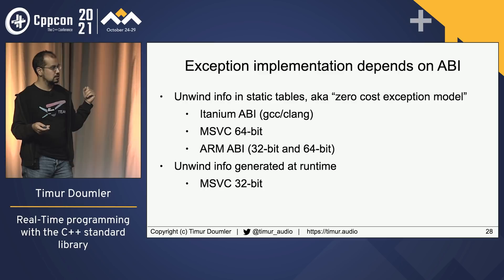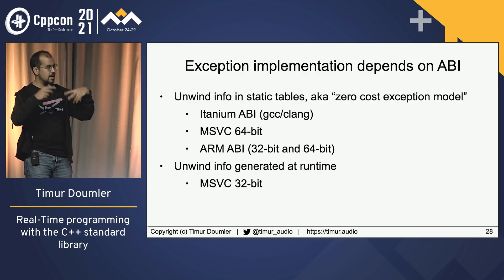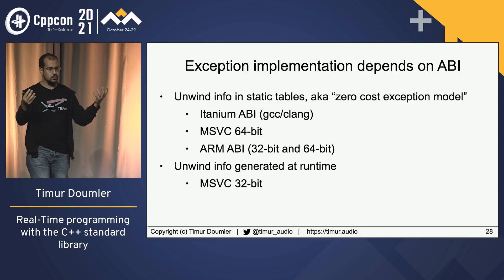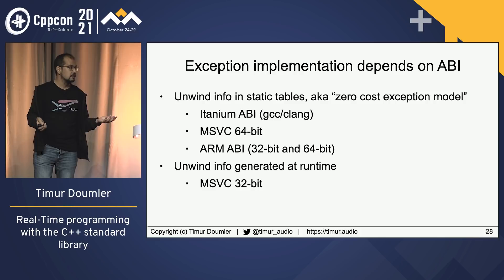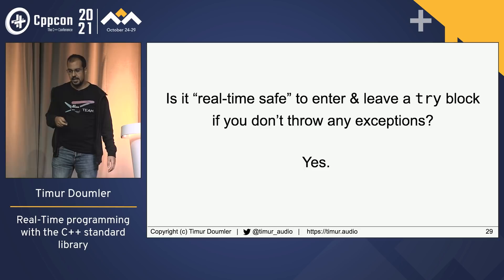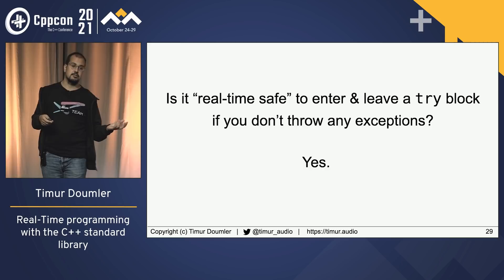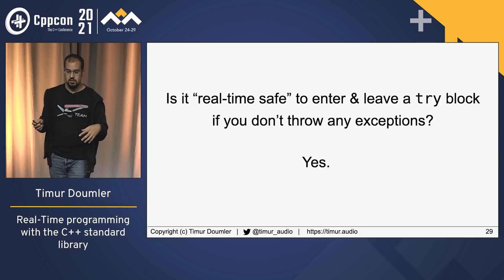ABI means Application Binary Interface — basically, how C++ code is going to be turned into machine instructions, which is different on every platform. Conclusion: is it real-time safe to enter and leave a try block if you don't throw any exceptions? Yes. It's practically zero cost on most platforms, and it appears to be real-time safe on every platform I'm familiar with. I don't know what happens on an exotic embedded platform with a very different ABI.